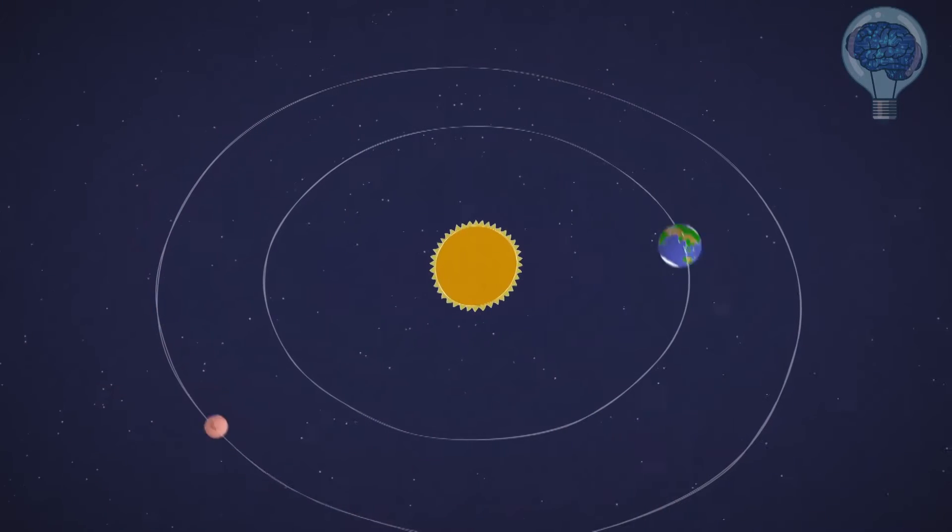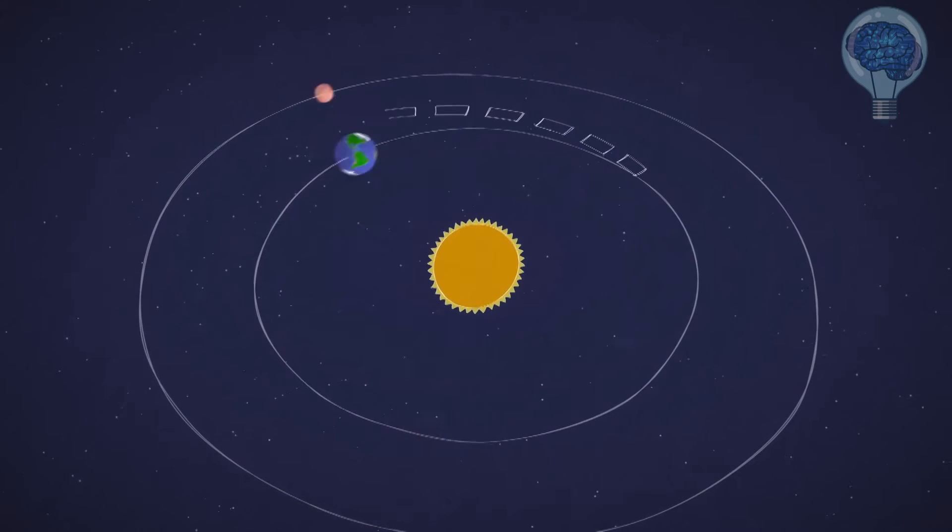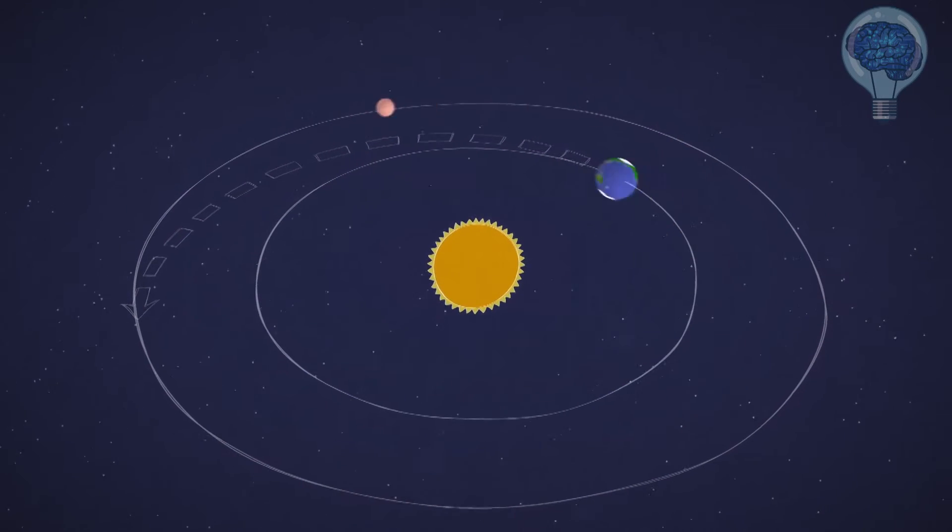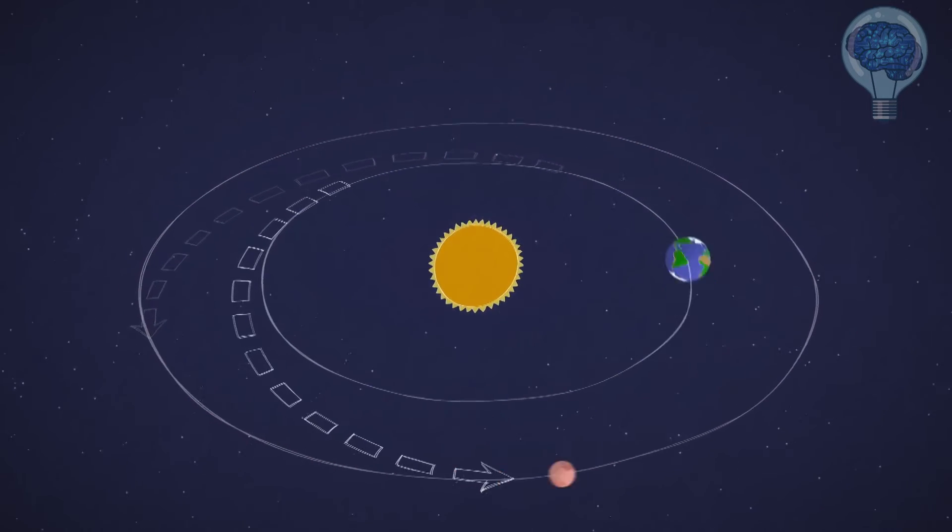The timing of Mars years is also important. Every 26 months we come closer to Mars, so it's one of the best times to send spacecraft. A shorter trip means less time and fuel spent getting there.